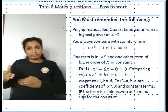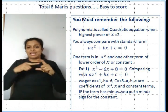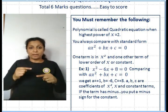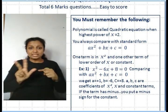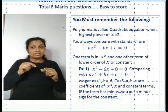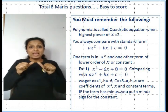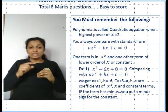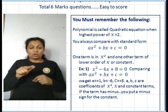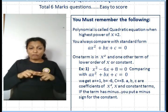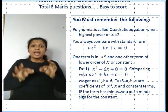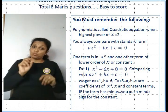Example 1: x² - 6x + 8 = 0. Comparing this with ax² + bx + c = 0, we get a = 1, b = -6, c = +8. Here a, b, c are the coefficients of x², x, and the constant term respectively. If the term has a minus sign, you put the minus sign in the coefficient.